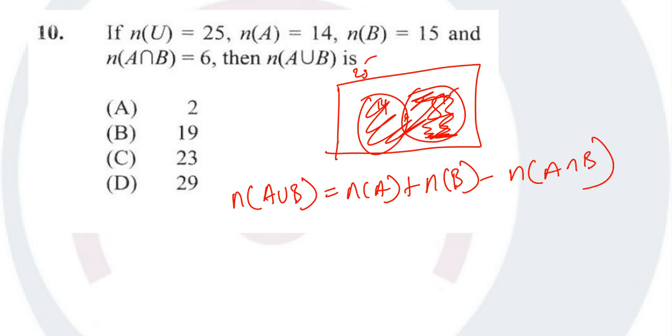So the number of elements in A is 14 plus the number of elements in B is 15 minus the number of elements in the intersection which is 6. So then we have 15 plus 14 minus 6, which gives us 23. So our answer will be the number of elements in A union B would be C, and that's it.